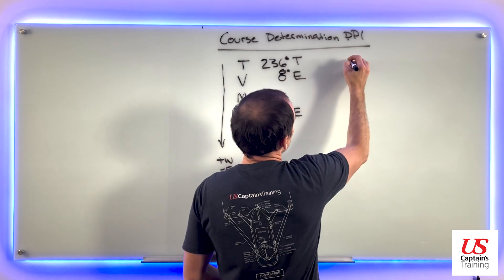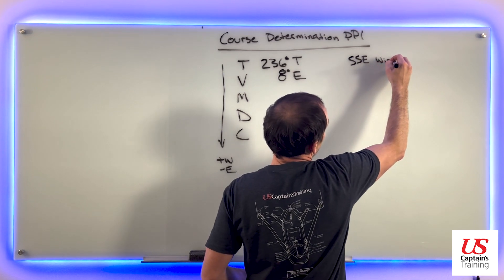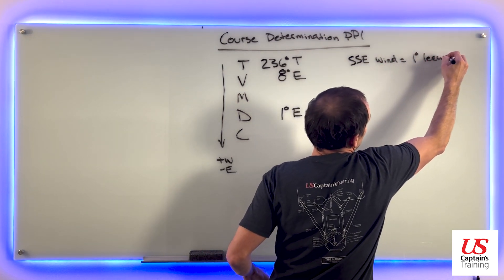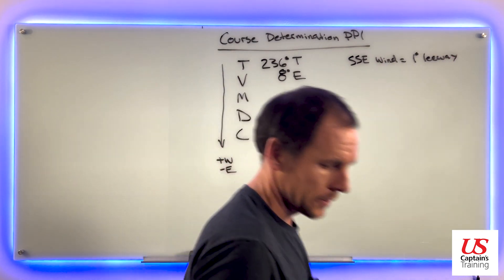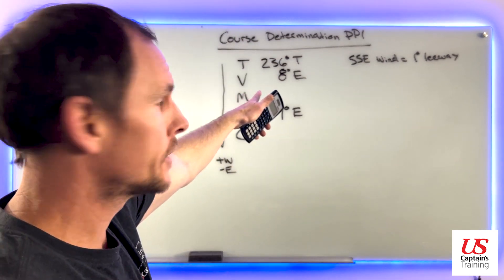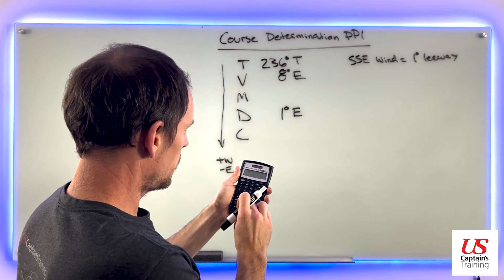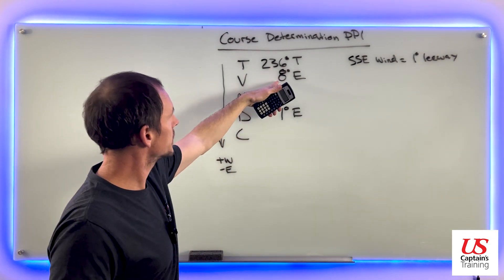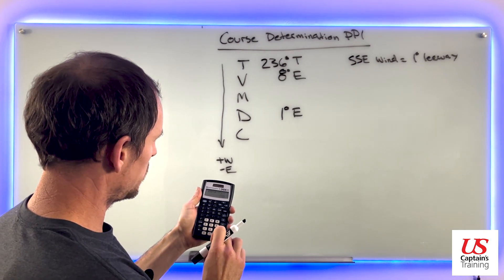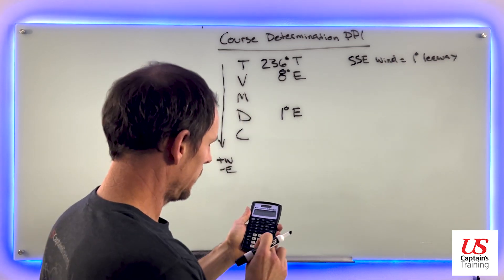A south-southeasterly wind produces a 1 degree leeway, so south-southeast wind equals 1 degree leeway. We'll account for this after we correct our compass. We start with 236 up here. 236, 8 degrees east, we subtract east. Minus 8 equals 228. 1 degree east, we subtract. Minus 1 equals 227.